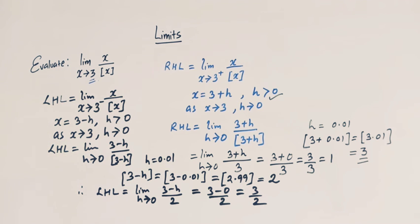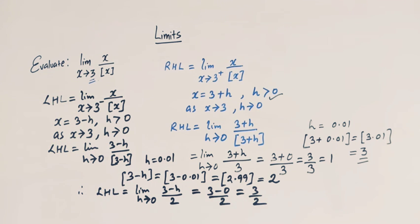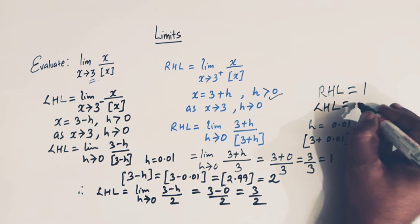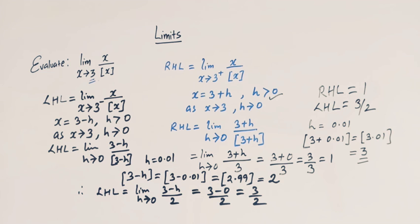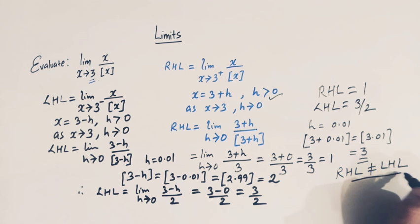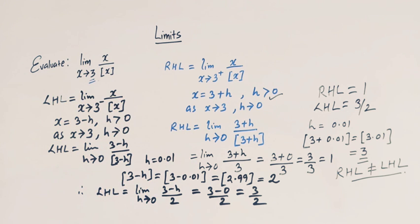So the left hand limit of this function when x approaches 3 is 3 over 2. This is how we find the right hand limit and the left hand limit. We draw an important conclusion: the right hand limit is 1 and the left hand limit is 3 over 2. Although both limits exist and are finite, the right hand limit is not equal to the left hand limit, and therefore the limit of this function as x tends to 3 does not exist.